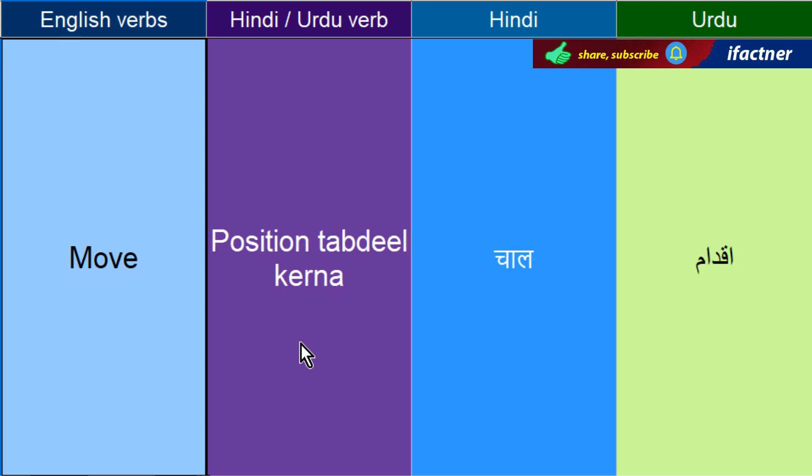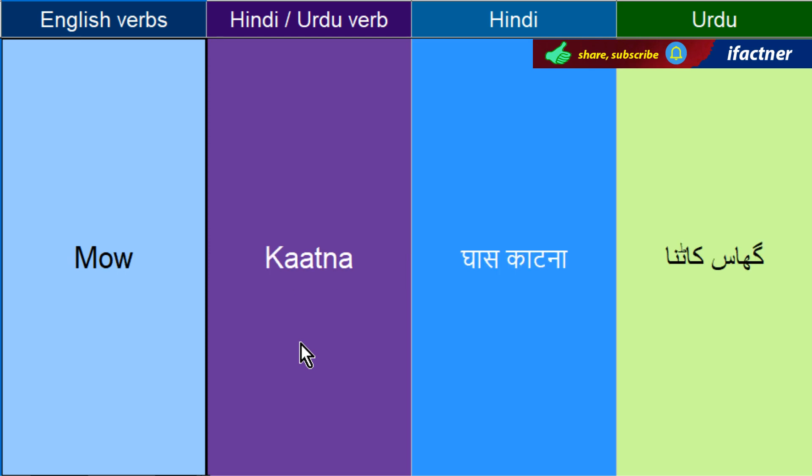Position tabdeel kerne ko kehengay — Move. Kaatna — Mow. Jis tarah ghas ko kaatna. Mow the grass — ghas ko kaato. Mow your lawn — aapne lawn mein ghas ko kaato. Mow ka matlab hi hota hai koi cheez — ghas ko kaatna.